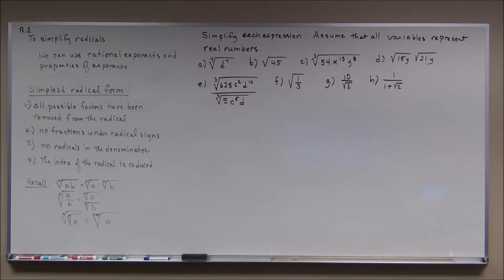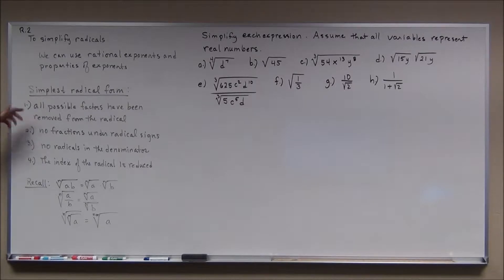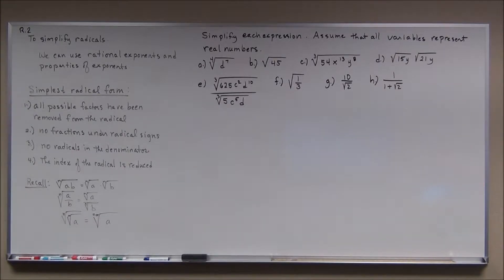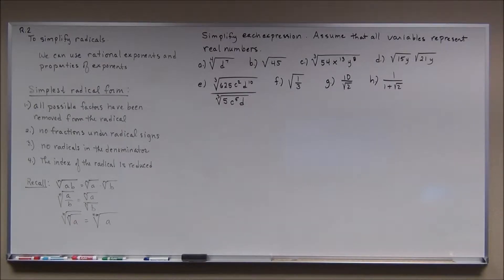Now there are different criteria you have to have to consider simplest radical form. All possible factors must be removed from the radical. If you think about the square root of 8, it has a factor that's a perfect square — 4, since 4 times 2 is 8. So the square root of 8 equals the square root of 4 times the square root of 2, which is 2 square root of 2.